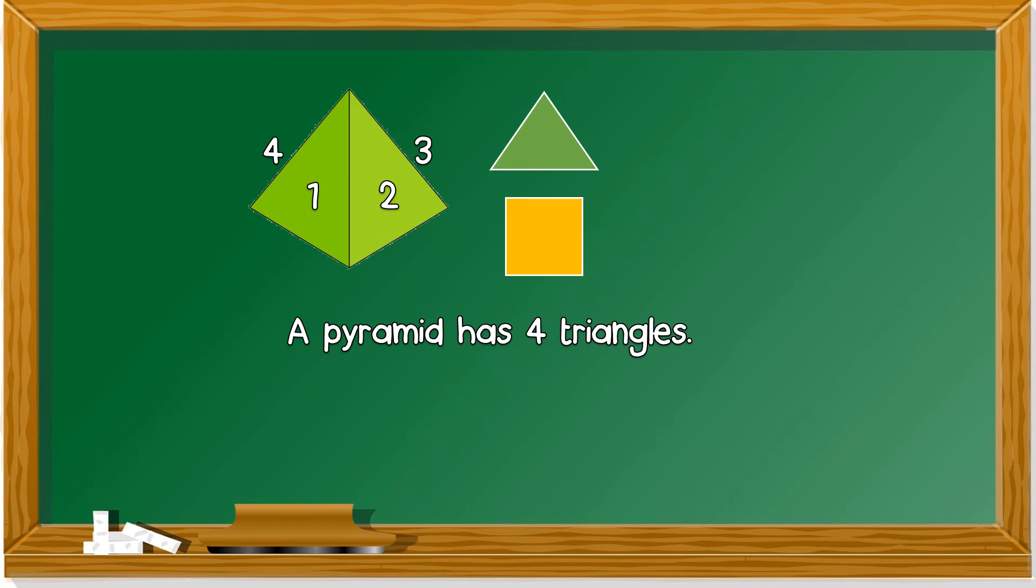The next shape, pyramid. Pyramid has triangles. What's another shape in a pyramid? Can you guess? It's a square. Where is the square? Let's look at it. Let's count the triangles first. 1, 2, 3 at the back, and 4 at the side. Number 3 is here and number 4 is here. So a pyramid has 4 triangles.